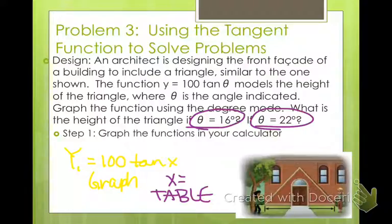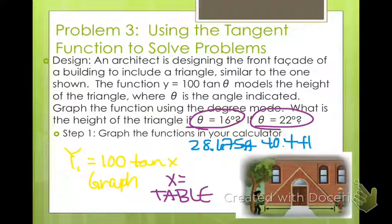When you get to x is 16, you should get y is 28.675 or very close to it. And then if you get to 22, it's about 40.4. And these are feet tall. So those are pretty big triangles. I don't know why you would want to make a triangular shaped entrance, but hey, you know, strange things have happened, apparently.